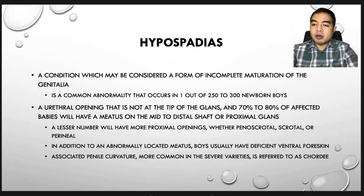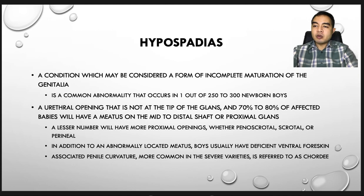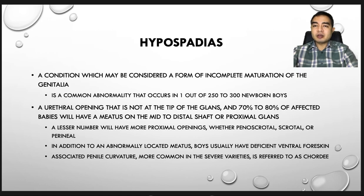70 to 80% of affected babies will have a meatus on the mid to distal shaft or proximal glans. A lesser number will have more proximal openings, whether penoscrotal, scrotal, or perineal. In addition to the abnormality of the meatus, boys usually have deficient ventral foreskin associated with penile curvature, more common in the severe varieties, and this is referred to as chordee.